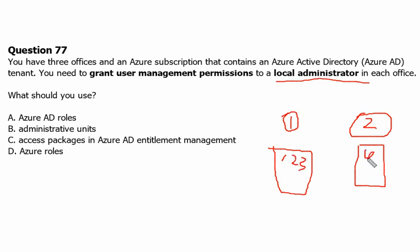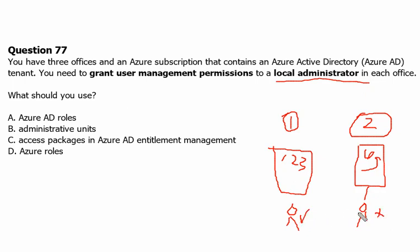For example, there are users in each office. Someone needs to manage the users in one office and act as administrator, and someone else is the administrator for the other office. The admin of one location should not be able to access the other location — that separation is what we want to achieve.